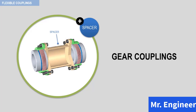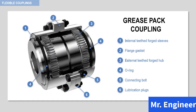Grease-packed couplings, like the one highlighted here, are normally designed with hub-mounted external gears, and the internal gears are part of a sleeve-type spacer which serves as a retainer for the grease lubrication. The flange joint of the sleeve is either precision ground to avoid lubrication leaks, or has a gasket between the two flange faces. The sleeve ends are fitted with O-ring seals, as depicted here, to keep dust out and lubrication in.